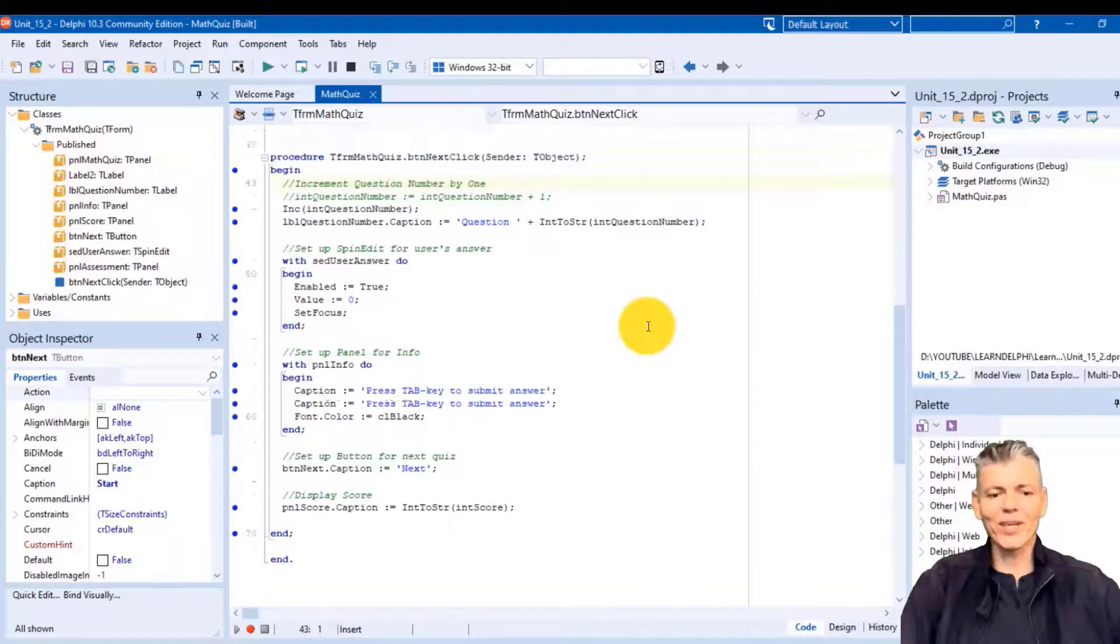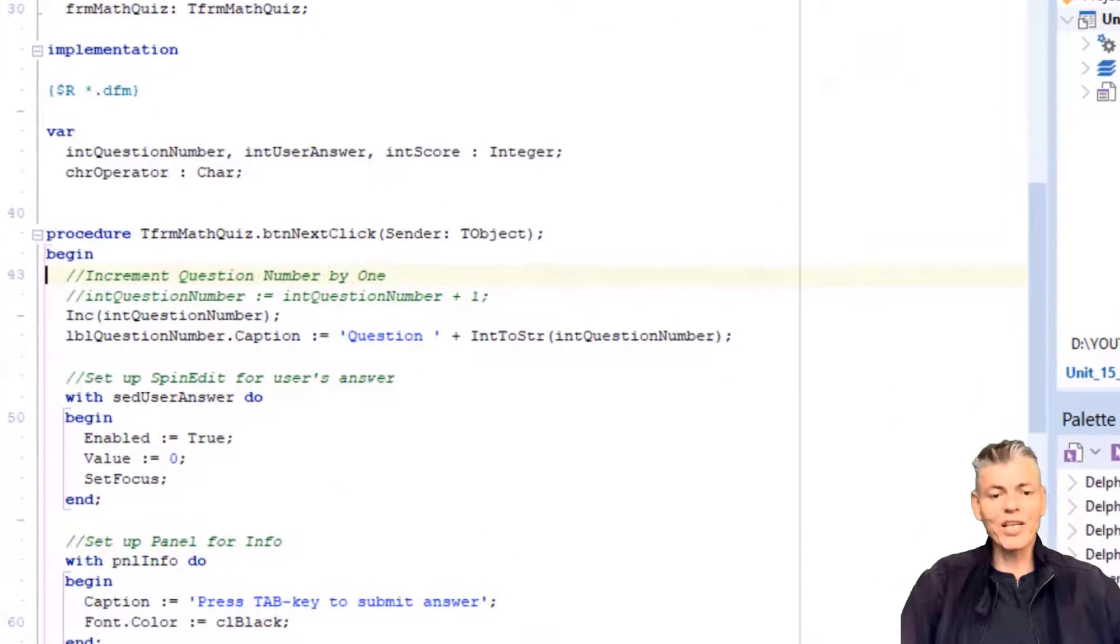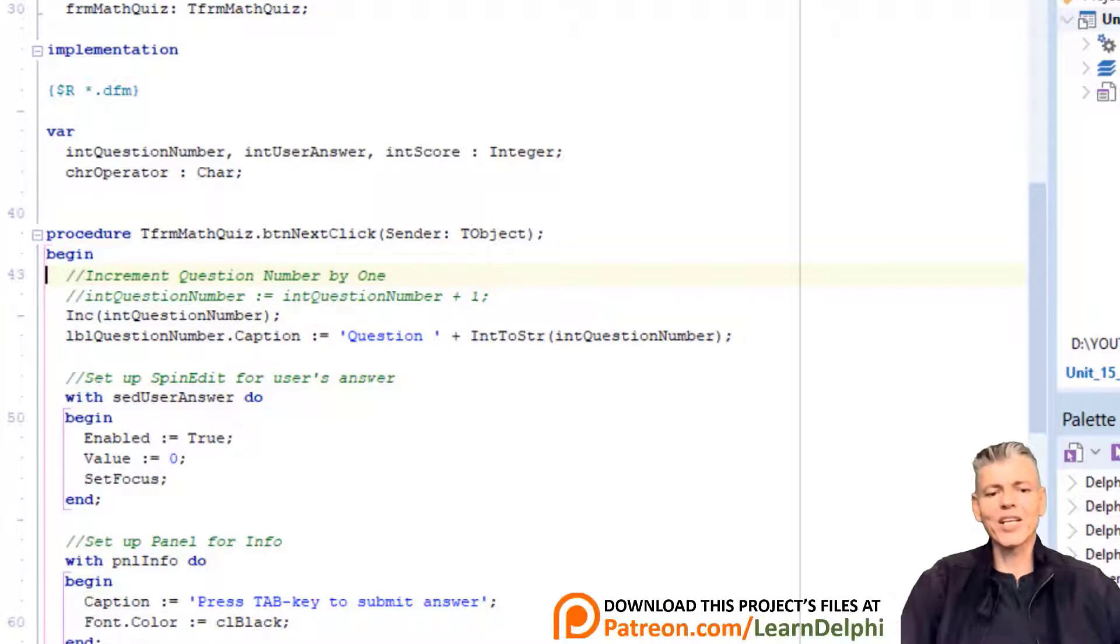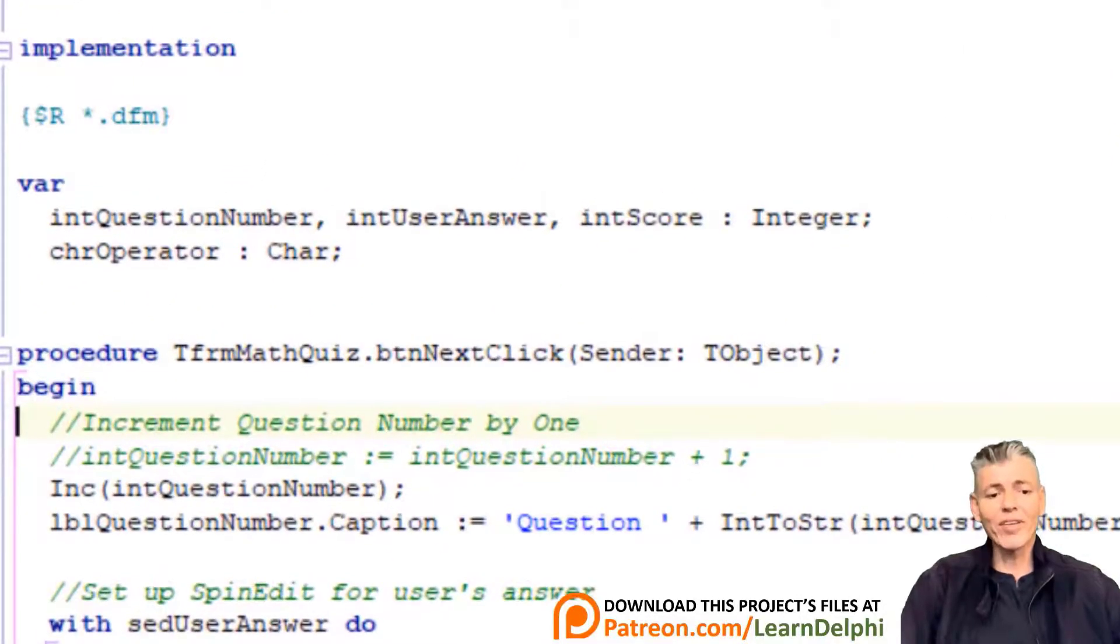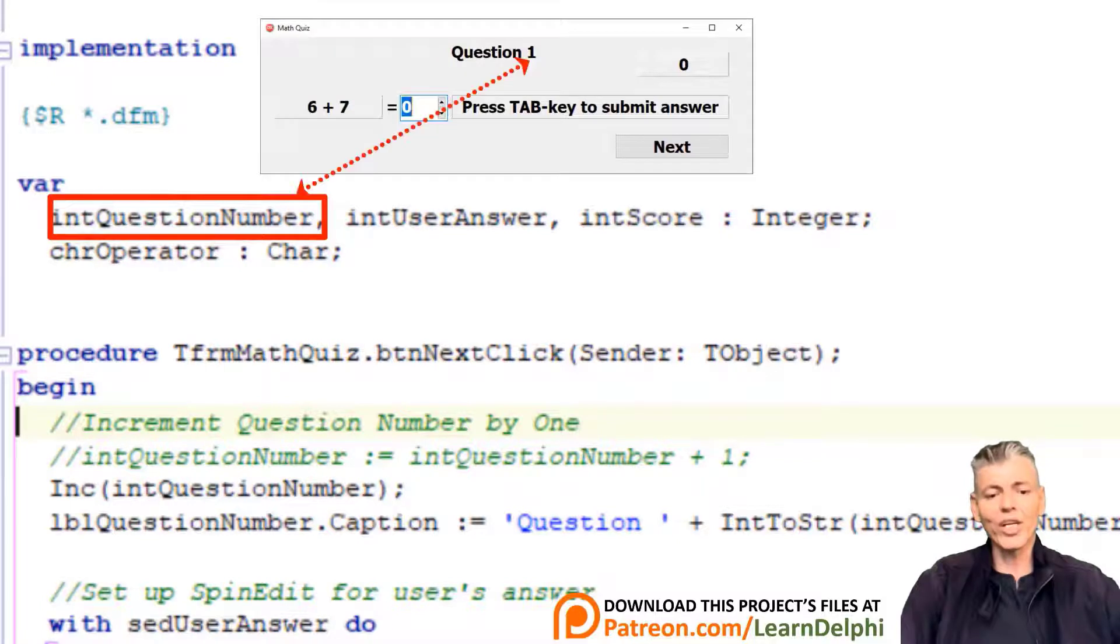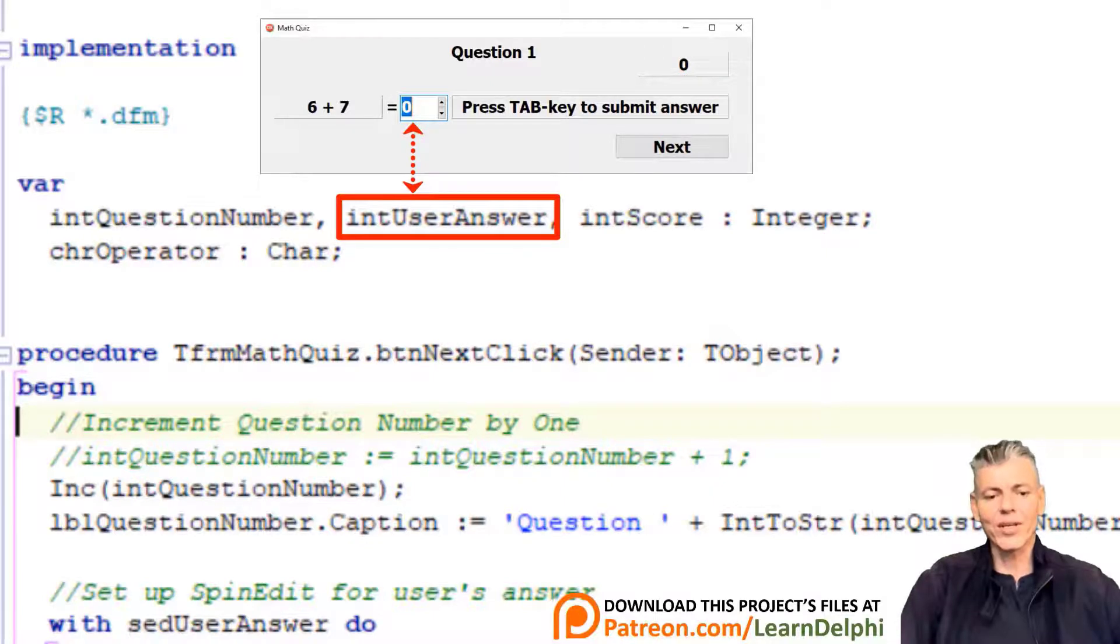Here we already have a few lines of code. All our variables must be accessible in more than one event handler, so we already declared some of them here under the implementation clause. We will need a few more variables that must be accessible in more than one event handler, so we will add them here under implementation. We already have an integer that must keep track of the question number and another integer that keeps track of the user's score and an integer variable for the user's answer.